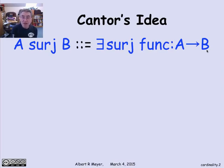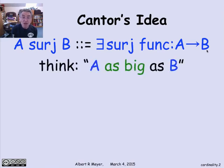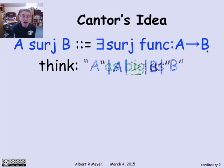And Cantor's idea was saying, well, it works fine for finite sets. Why don't we take this as the definition of what we mean by A is at least the size of B for infinite sets. So we're going to think of A surge B now as saying A is as big as B. And for finite sets, it's literally true that A surge B if and only if the size of A is greater or equal to the size of B.